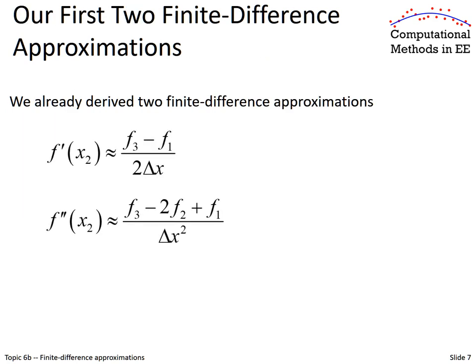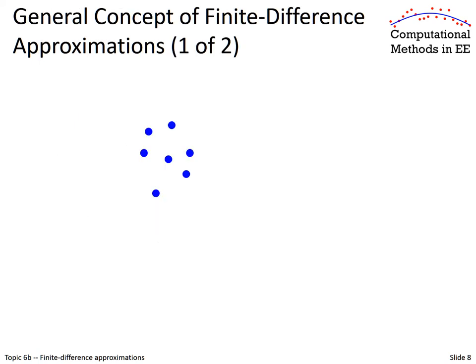So we have two finite difference approximations already. What we have just talked about is not very generalizable, so the polynomial technique we will teach in a little bit is a lot more powerful. Before we get into that, I want to try to generalize the concept of what a finite difference approximation is. Picture a random scattering of points — they do not have to be distributed uniformly, just some random smattering.